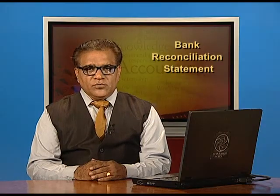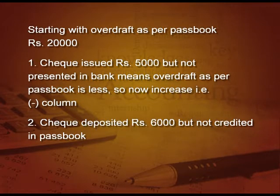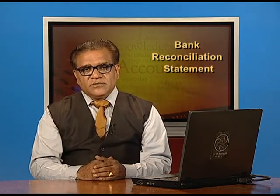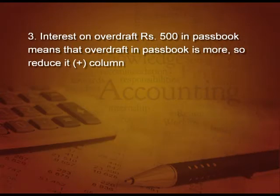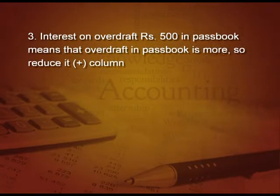Coming to point number 2: check deposited 6,000 but not credited in the pass book means pass book overdraft is more, because when you deposit the check, in the cash book you reduce your overdraft, but in the pass book it has not come. So pass book overdraft is more — to reduce it, write in the positive column. As regards point number 3, interest on overdraft 500 in the pass book means that overdraft in the pass book is more. To reduce it, go to the positive column.